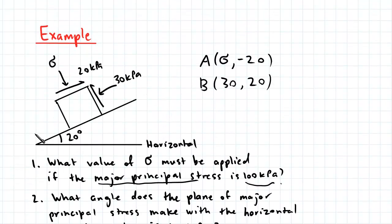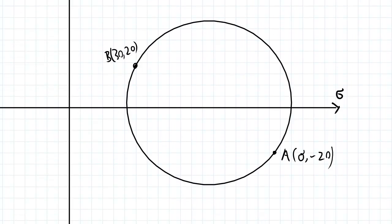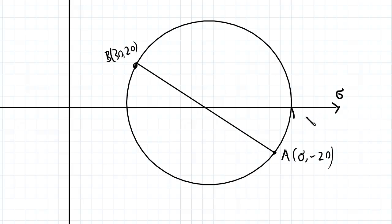So because these stresses are acting perpendicularly to each other, we know that on the Mohr Circle we can connect these two points with a straight line, like so. We also know this point here is the major principal stress, and we know that this distance here...